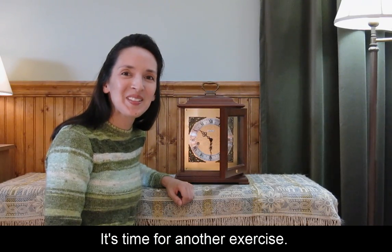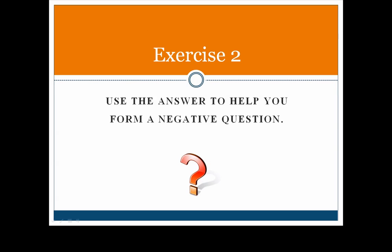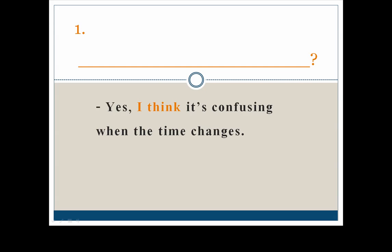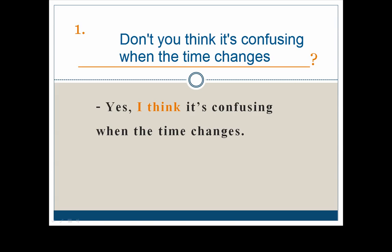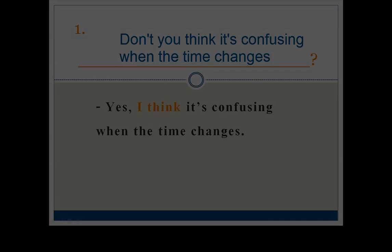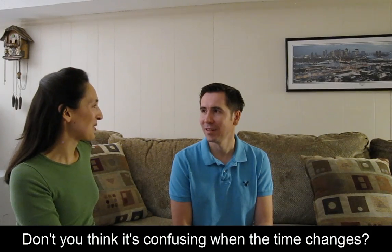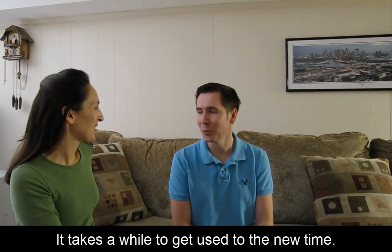It's time for another exercise. Exercise 2: use the answer to help you form a negative question. Look at the answer to form the negative question. The words in orange give you a clue. The question: 'Don't you think it's confusing when the time changes?' Now listen and you'll hear this question used in conversation. 'Don't you think it's confusing when the time changes?' 'Yes, I do. It takes a while to get used to the new time.'